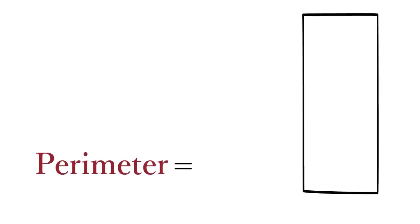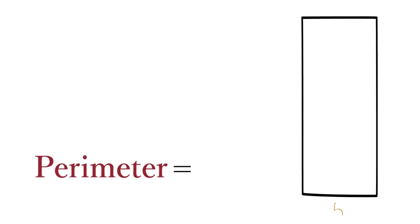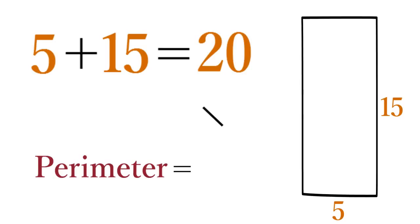And to find the perimeter of a rectangle with a base of five and a height of fifteen, add five plus fifteen equals twenty, times two equals forty.